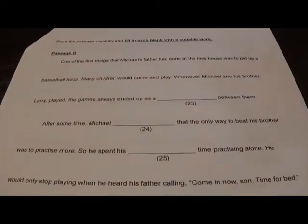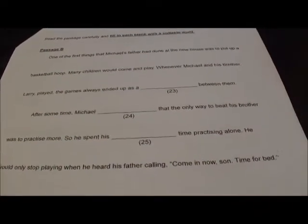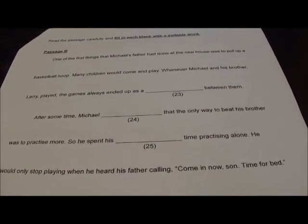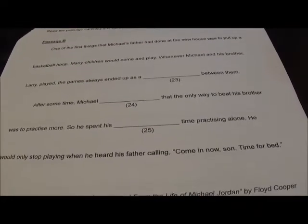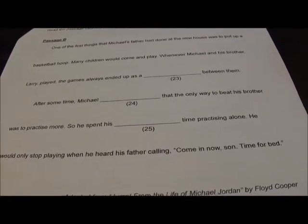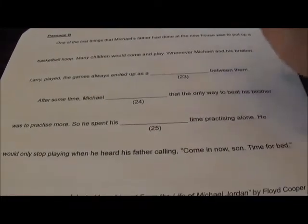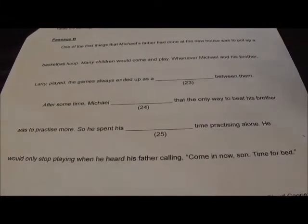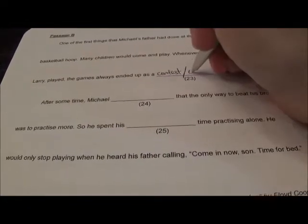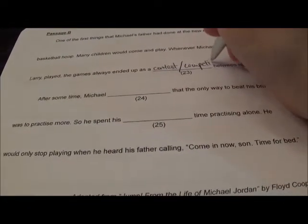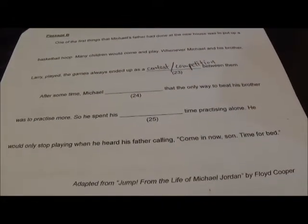Passage B: One of the first things that Michael's father had done in the new house was to put up a basketball hoop. Many children would come to play. Whenever Michael and his brother Larry played, the games always ended up as a contest — a competition between them.